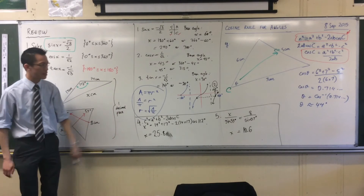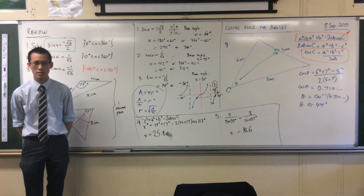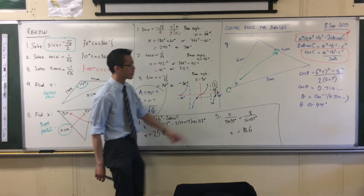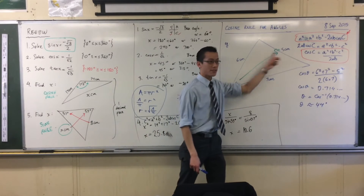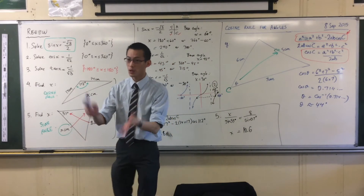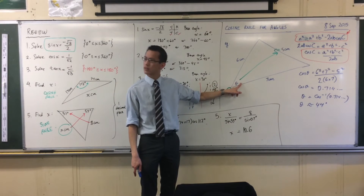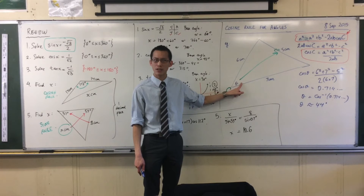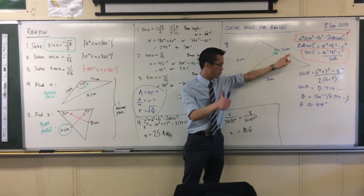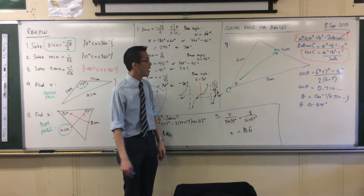Now let's just pause for a moment before we leave this. Does it make sense? Does it look reasonable? I think it looks reasonable — 44 degrees. You notice, out of sides five, six, and seven, from the sine rule we ought to expect that this is the smallest angle in the triangle. Does that make sense? It's the smallest angle because it's opposite the smallest side. So 44 degrees — yeah, I've got room in there to make some bigger angles. This makes sense.